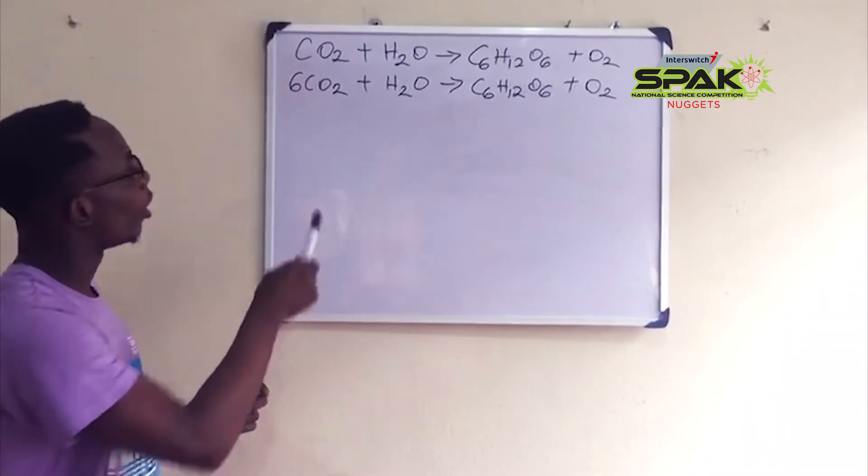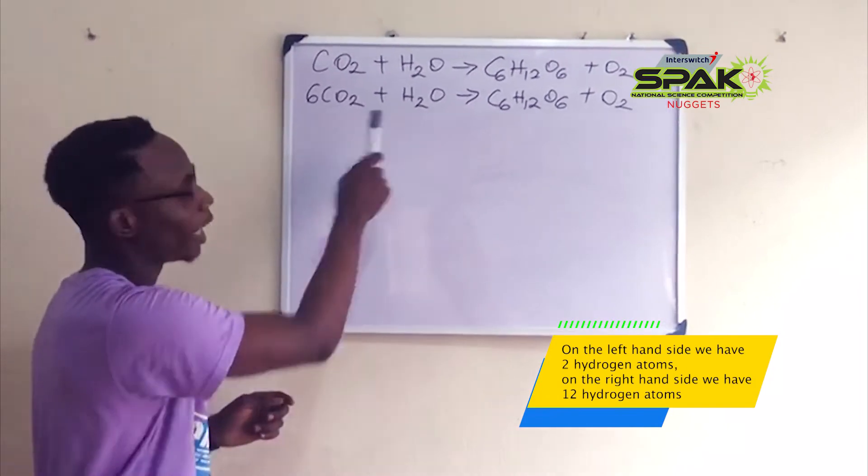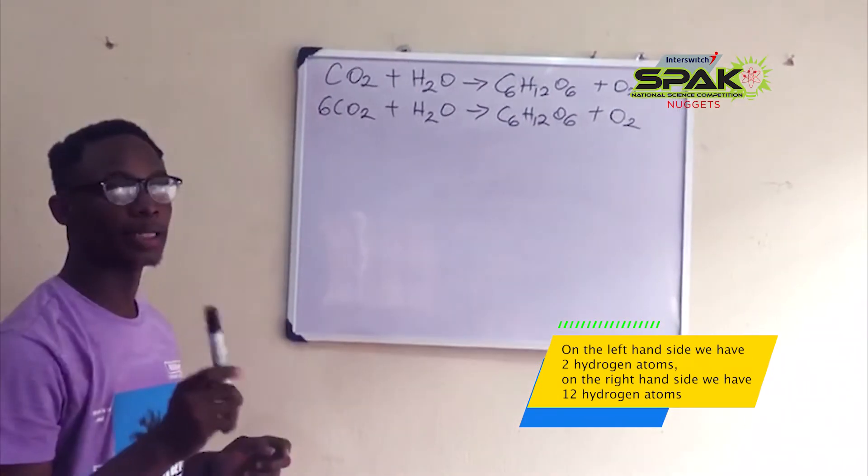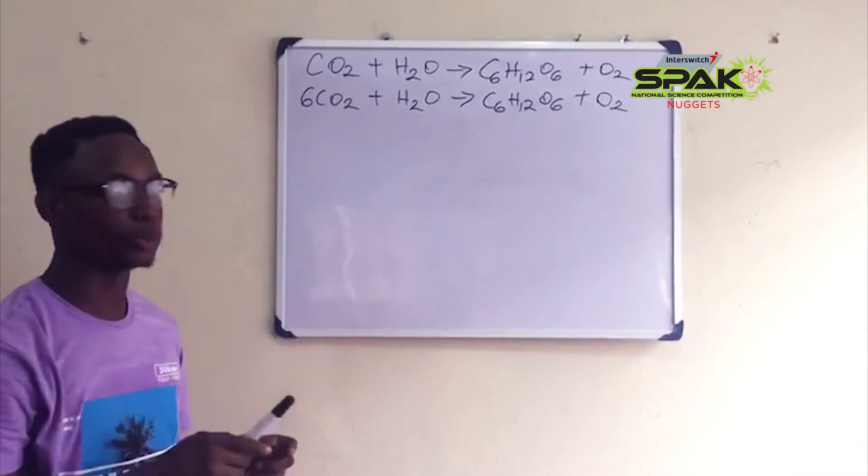Now, we balance the hydrogen atoms. On the left hand side we have 2 hydrogen atoms and on the right hand side we have 12 hydrogen atoms. So, we place 6 behind the water molecule to balance the hydrogen atoms.